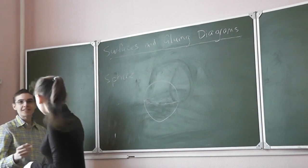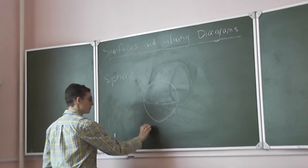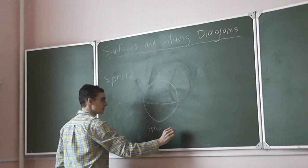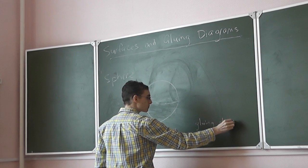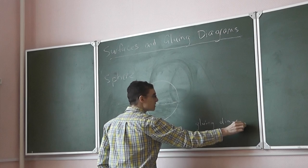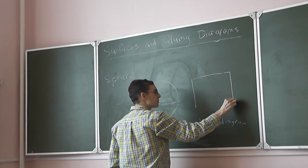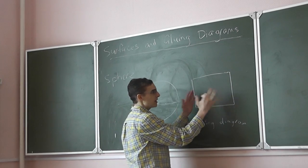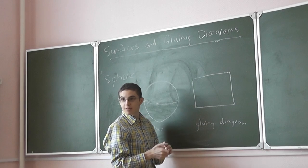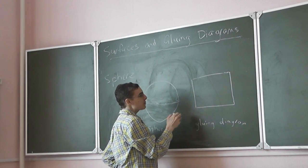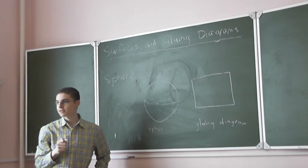Would someone like to give a gluing diagram for the sphere? Remember what a gluing diagram was — we draw a diagram in a plane and fold up the edges in some way to form a surface. Does anyone want to have a go at drawing arrows on this square so that you get a sphere?